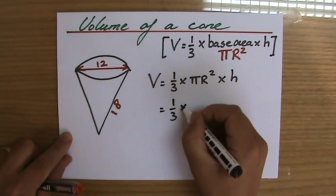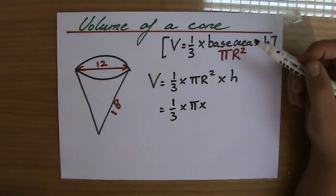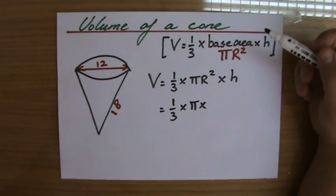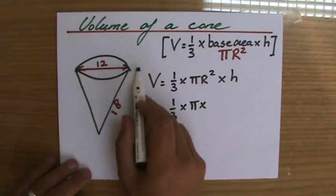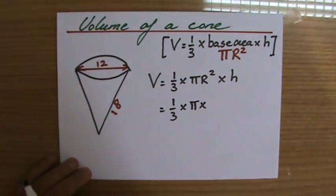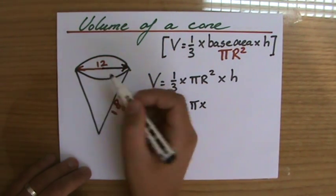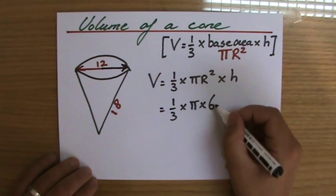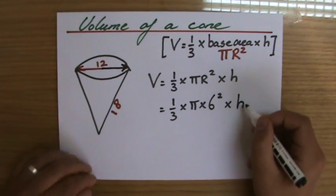One-third times π times, what is the radius guys? The radius is six - excellent. It's not twelve. Twelve is the diameter and the radius is half the diameter, from the center to the side, so that is six squared times the height.